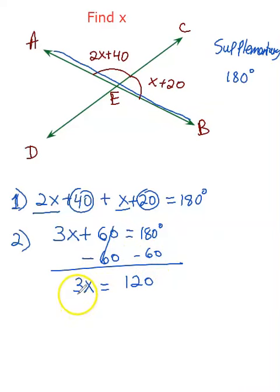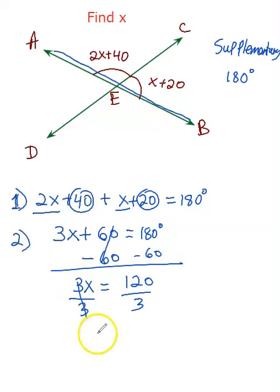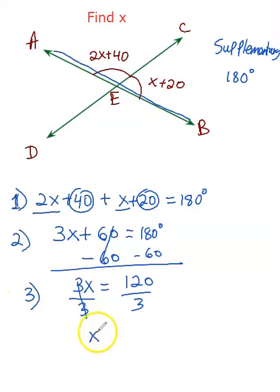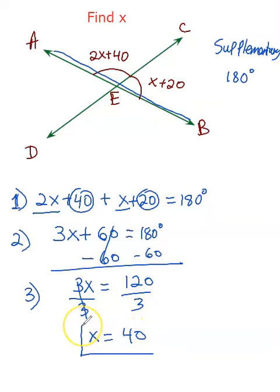So for step three, we're going to divide by 3 on both sides. So x is equal to 120 divided by 3, which is 40. Your final answer to find x is 40.